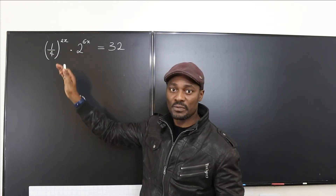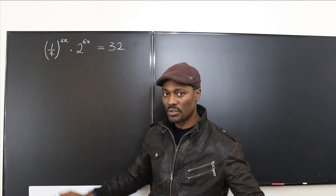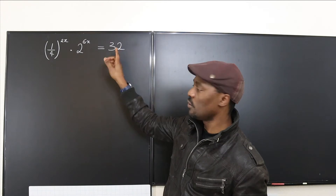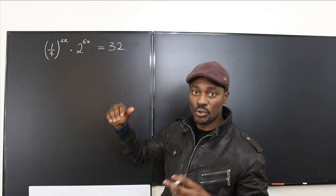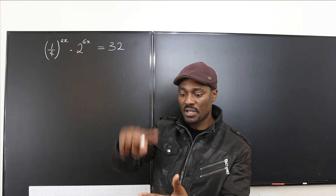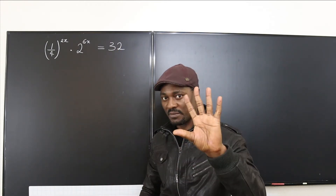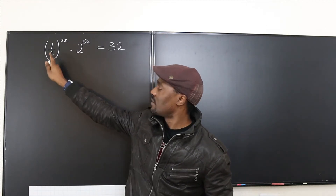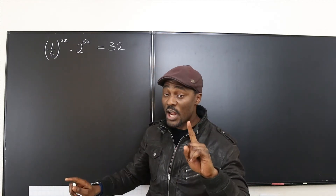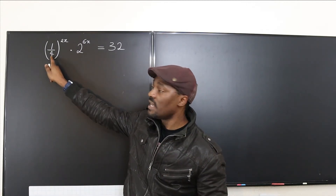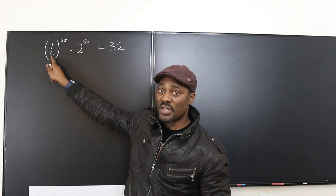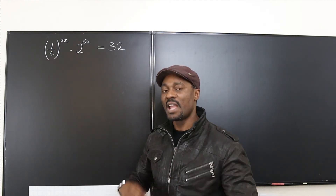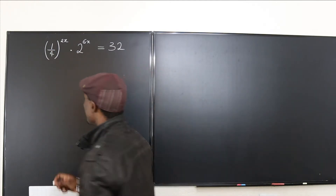If you can write all terms as powers of 2, you've essentially solved the equation. How do we write 32 as a power of 2? 2 to the 5th — 2 times 2 five times gives you 32. And what about 4? We know 4 is a power of 2, specifically 1 over 2 squared — so that's how we'll rewrite it.